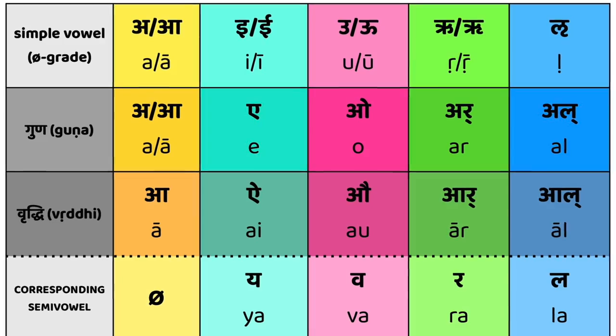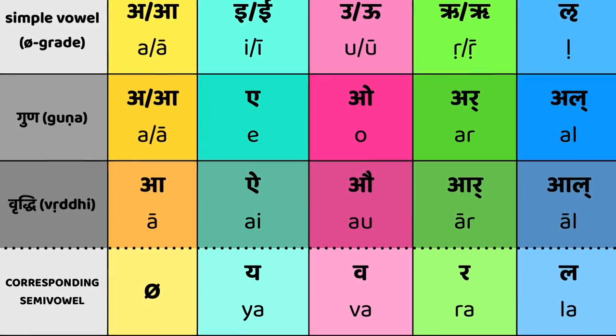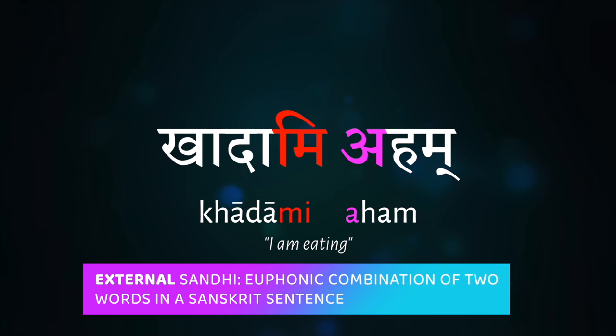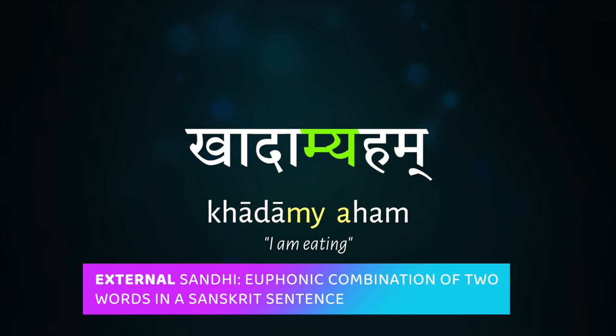Now that we've learned about the idea of vowel strengthening, about gunas and vriddhis, we can start getting into all the various rules of what we call external sandhi — what happens when two words in a Sanskrit sentence meet each other, a euphonic combination in English.